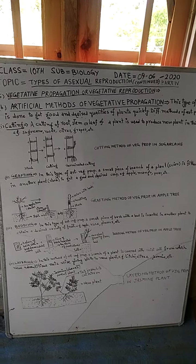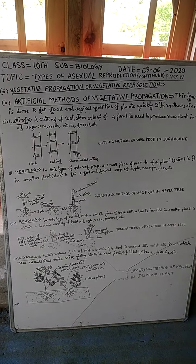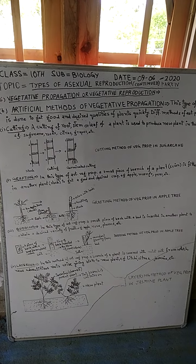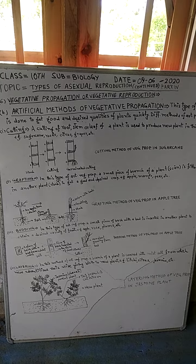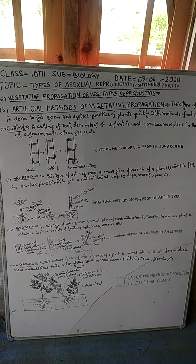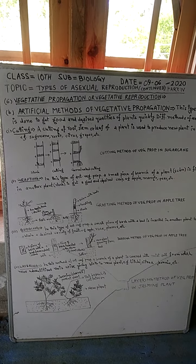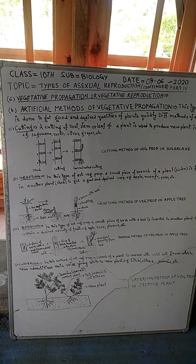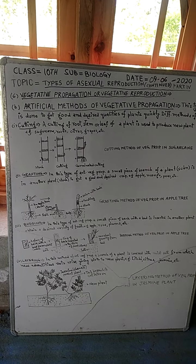This type of vegetative propagation is done to get good and desired qualities of plants quickly. Different methods of artificial propagation are: number one is cutting, second is grafting, third is budding, fourth is layering.